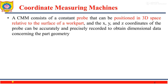A Coordinate Measuring Machine (CMM) is an electromechanical system designed to perform coordinate metrology. A CMM consists of a contact probe that can be positioned in 3D space relative to the surface of a work part, and the XYZ coordinates of the probe can be accurately and precisely recorded to obtain dimensional data concerning the part geometry.